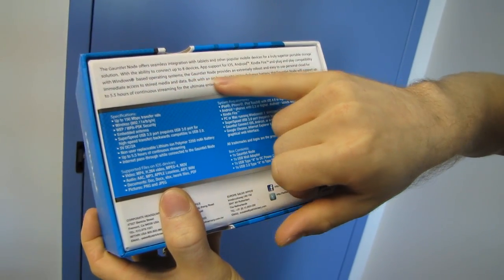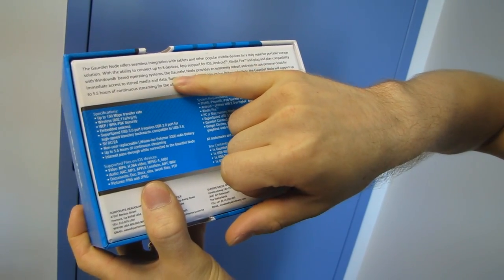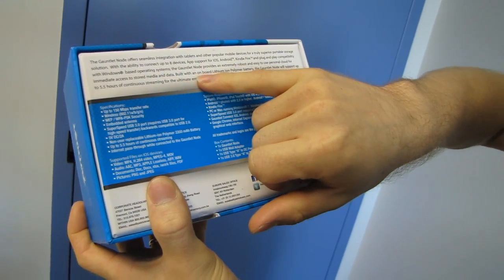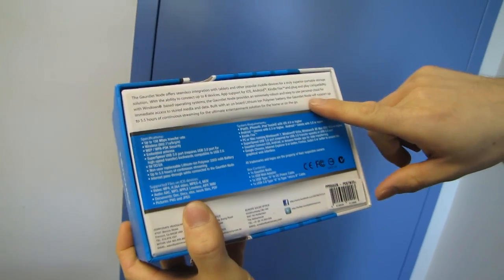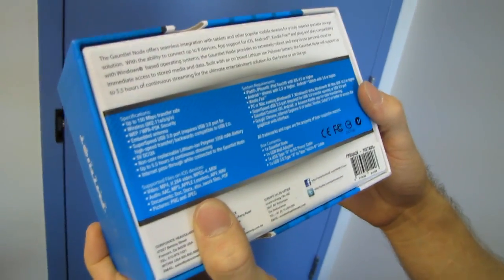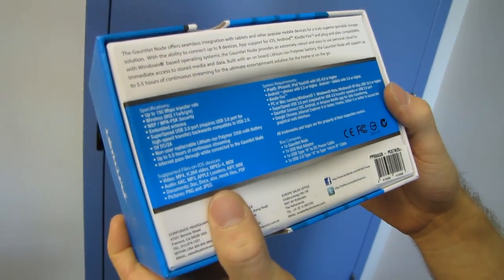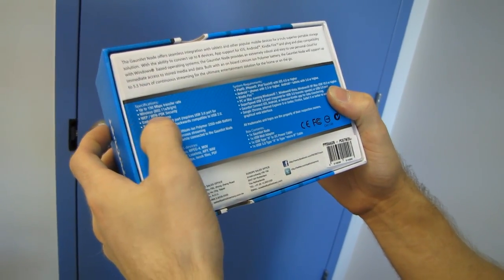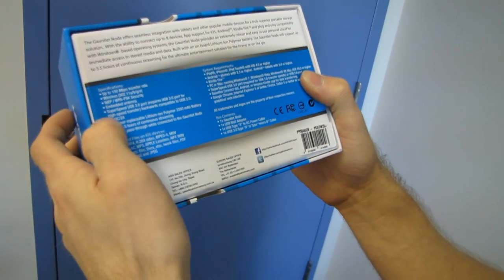Windows-based operating systems. The Gauntlet Node provides an extremely robust and easy-to-use personal cloud for immediate access to stored media and data. With a built-in battery, the Gauntlet Node will support up to 5.5 hours of continuous streaming for the ultimate entertainment solution on the go. Wi-Fi 150 megabit per second, WPA-PSK security is supported, non-replaceable battery, up to 5.5 hours of continuous streaming.